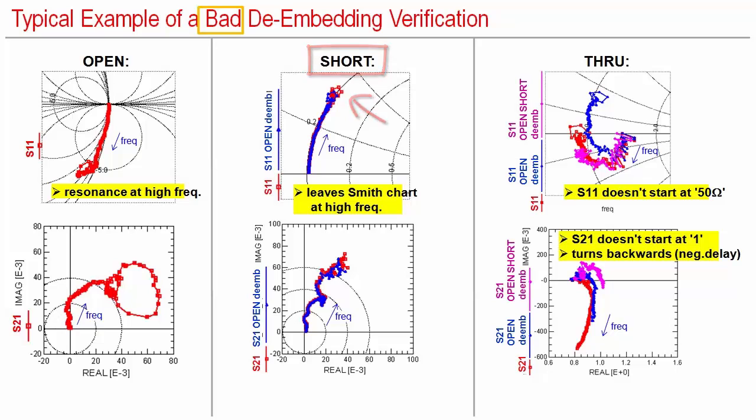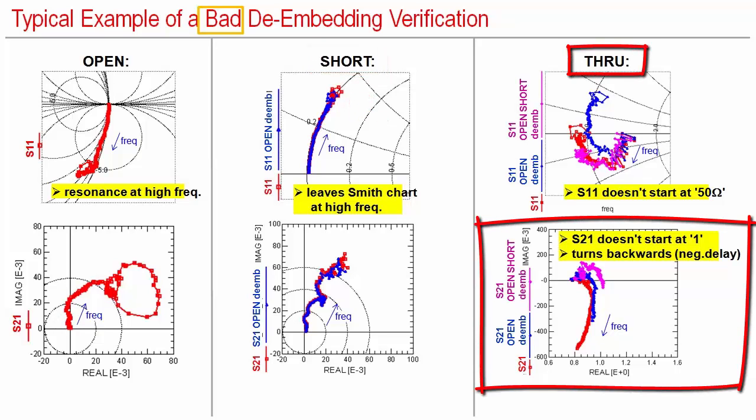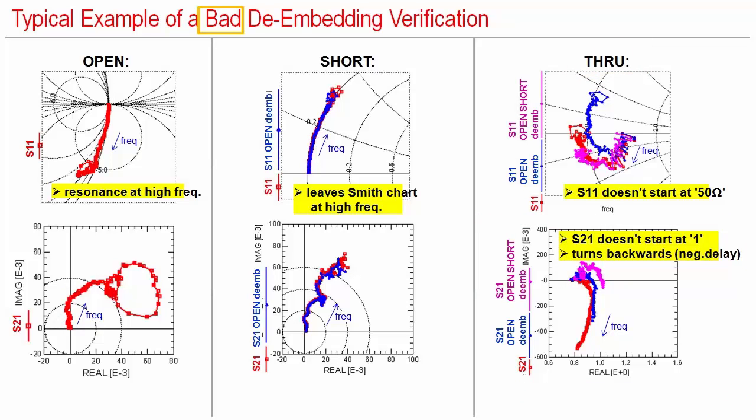But the S21 transfer characteristic of the through de-embedded from both open and short in magenta shows unphysical ohmic losses. Additionally, it unphysically turns backwards for low frequencies. This de-embedding has to be rejected completely.